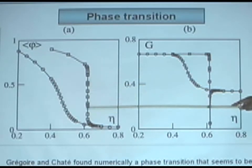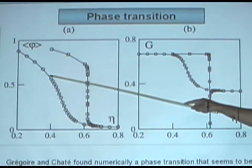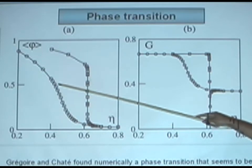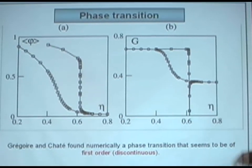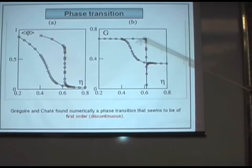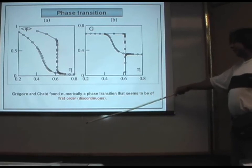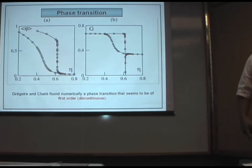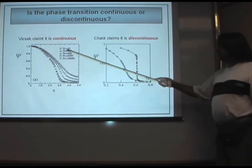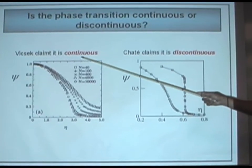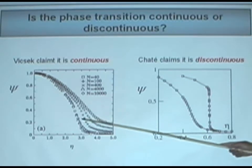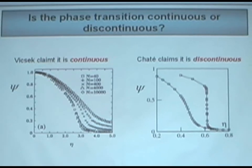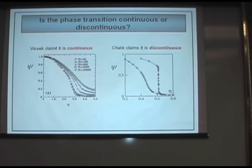They say that, well, this is clearly a discontinuous phase transition, and they say that the Vicsek transition is also discontinuous, but it doesn't look like it because of finite size effects. For an infinite system, this curve eventually becomes like this other one. So far, they have only numerical results, numerical experiments. Grégoire-Chaté played a transition that seems to be of first order, and then the question emerges. There is this controversy that Vicsek claims that the phase transition is continuous, and Chaté claims that it is discontinuous. By analyzing the nature of this phase transition in experiments, we could have some insight into the interaction rules of the elements.